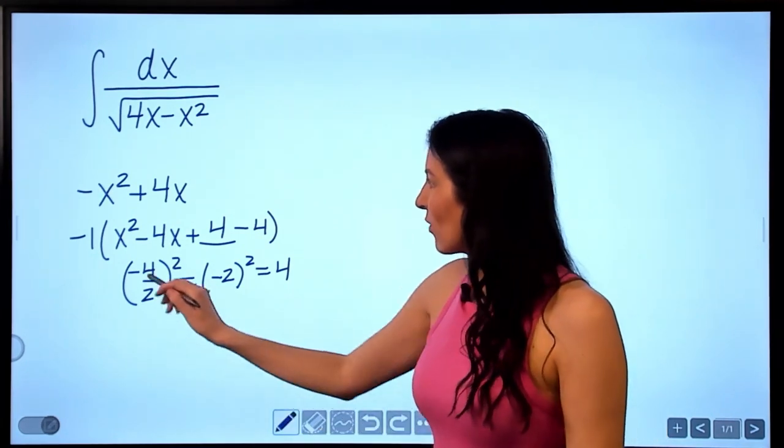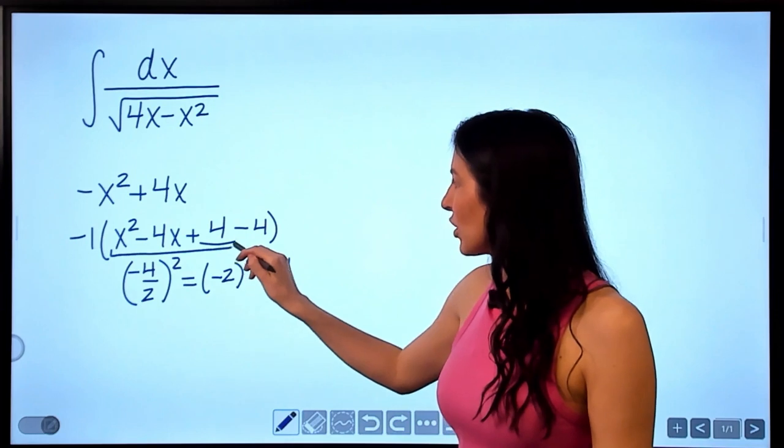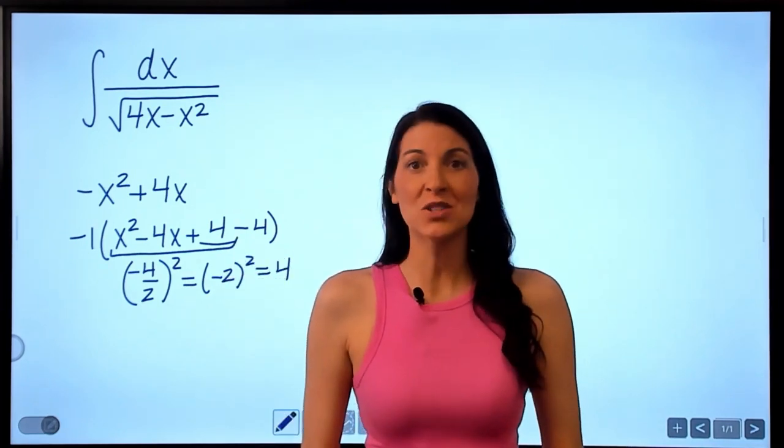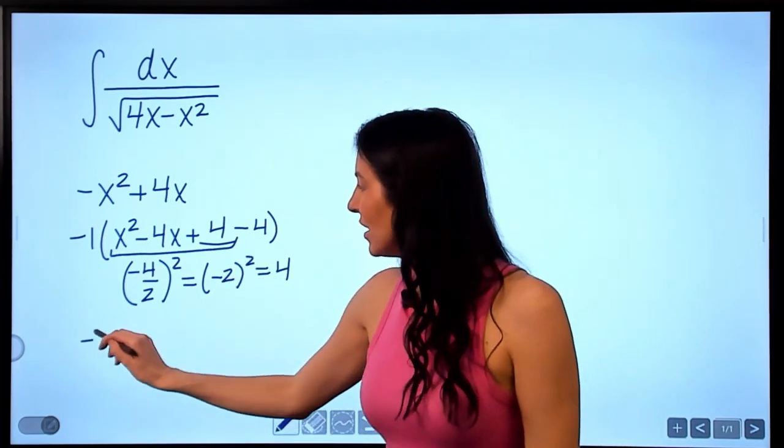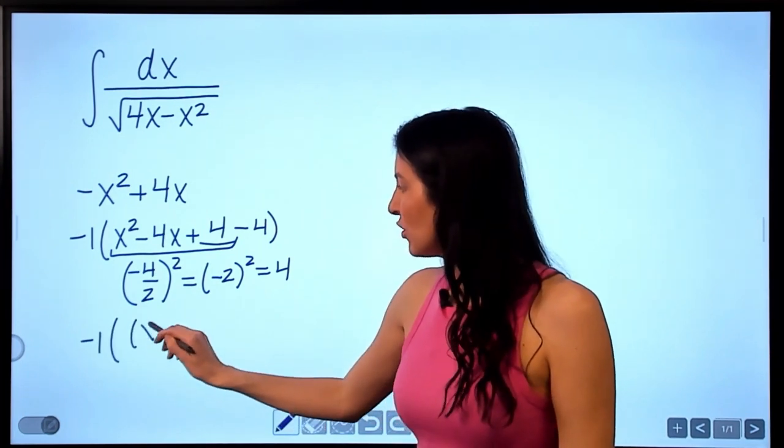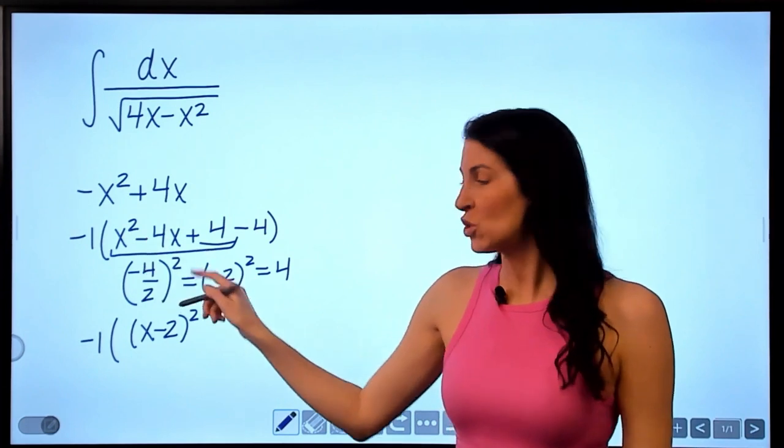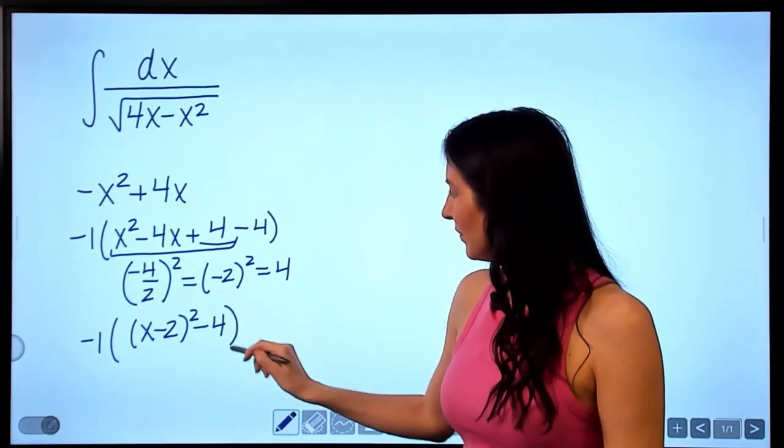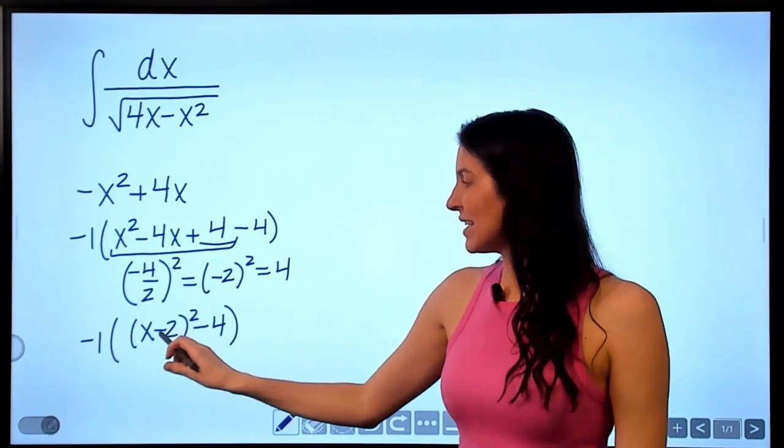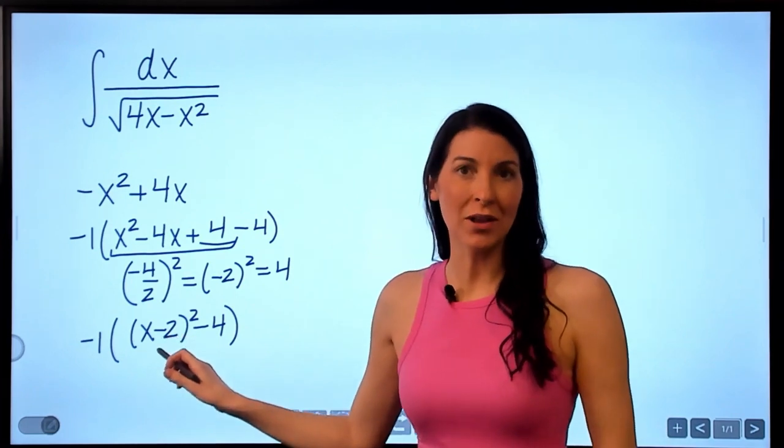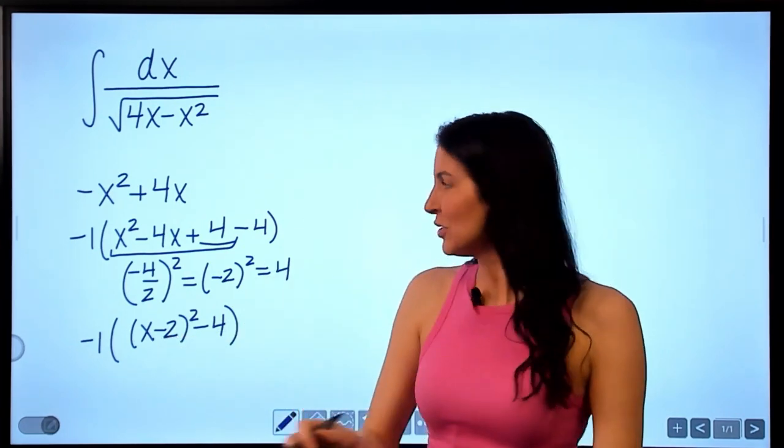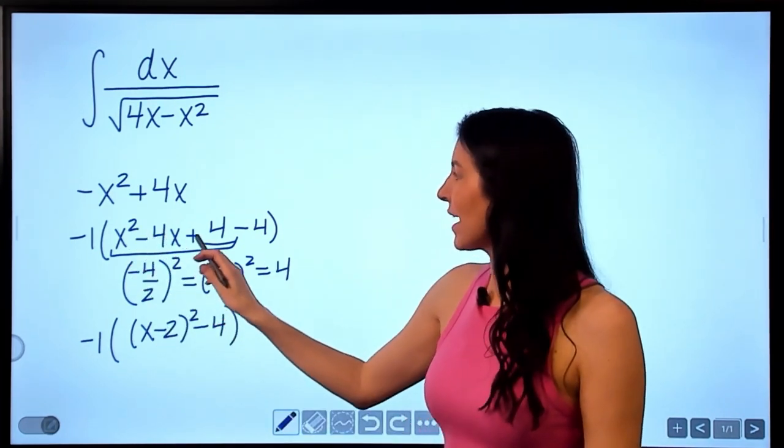What I've done when I complete the square is I've turned this into a perfect square trinomial that can be factored. So this can then be factored to x minus 2 times x minus 2 or x minus 2 squared. So once again, that means if I were to multiply or foil out x minus 2 times x minus 2, I would get x squared minus 4x plus 4.